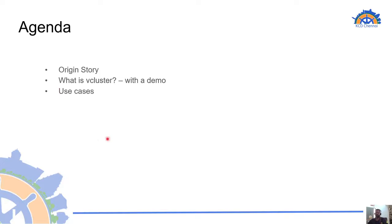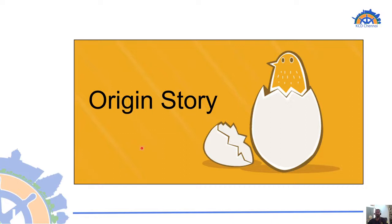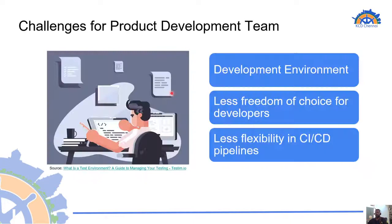Let's start with the origin story. The origin story is based on the challenge that we faced in our organization — it may be applicable for others too. As we know, in any cloud-native product development team, the test environment — that is, the Kubernetes cluster — plays a major role in day-to-day tasks: during the study phase for proof of concept, during development for testing code changes, and during testing to certify releases in the CI/CD pipeline. Let's see these challenges one by one.